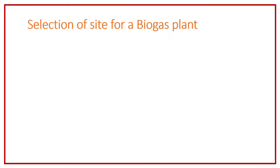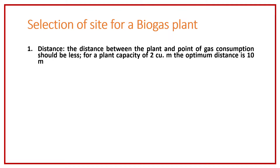The first point is the distance between the point of source and the point of use. The point of source means the point at which we are constructing our biogas plant, and the point of use is the kitchen where we have placed our biogas burner. That distance should be less, so that we can reduce the cost, and the optimum value is about 10 meters for almost a 2 cubic meter capacity biogas plant.